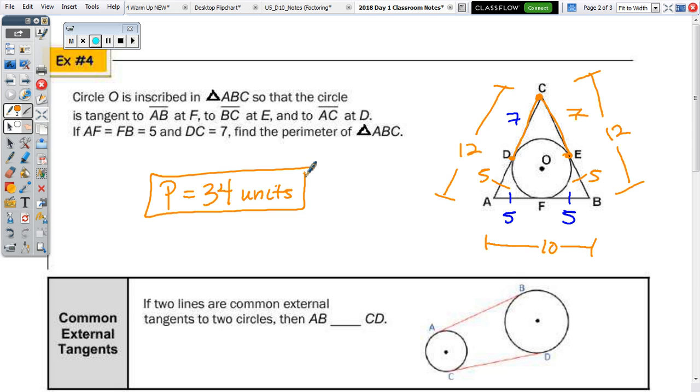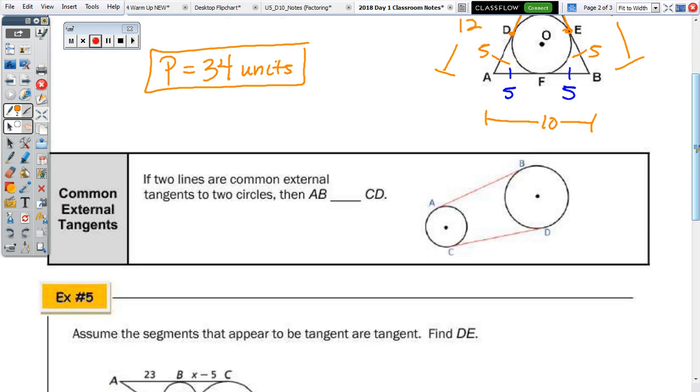So, those of you that are taking the Project Lead the Way classes, a picture like the next box for our common external tangents theorem probably looks familiar. So, if two lines are common external tangents to two circles, then what's true about their length?